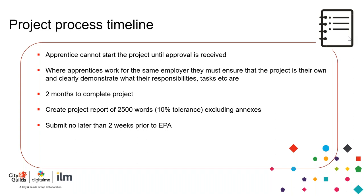The project can be too big or too small — if too small, it's less likely to cover all the KSBs. Once the project has been completed, the learner creates a project report of 2,500 words with a 10% tolerance. The apprentice can include appendices if they wish, but everything must be appropriate and linked to the KSBs. Like the portfolio, the report must be submitted no later than two weeks prior to endpoint assessment.